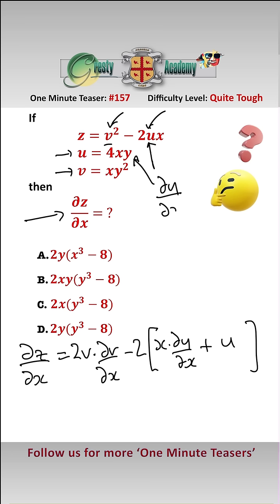Now the partial derivative of u with respect to x is equal to 4y, and the partial derivative of v with respect to x is equal to y squared. All we have to do now is plonk all of that into here,